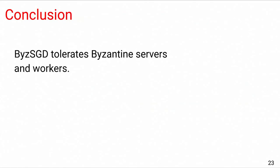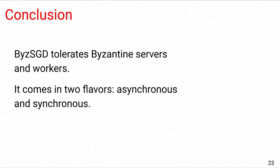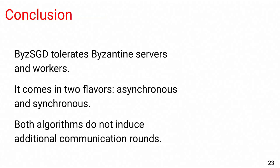This brings me to the conclusion of this presentation. In this paper, we proposed an algorithm called BizSGD, which allows for genuinely distributed Byzantine machine learning. Essentially, BizSGD does not assume any trusted component in the network, as it can tolerate Byzantine servers as well as Byzantine workers. We proposed two versions for this algorithm. One of them works in the asynchronous environment, and the other one is much more efficient yet it requires synchrony. It's important to note that both algorithms do not induce any additional communication rounds on the normal path compared to vanilla distributed learning case with no Byzantine resilience. With this, I'd like to conclude our presentation. Thank you for your attention.